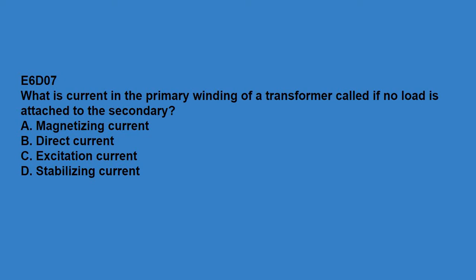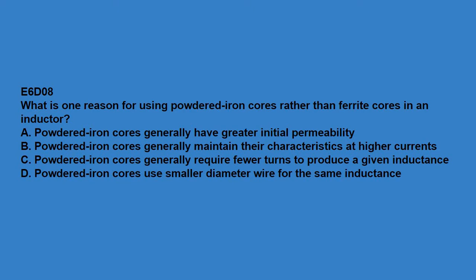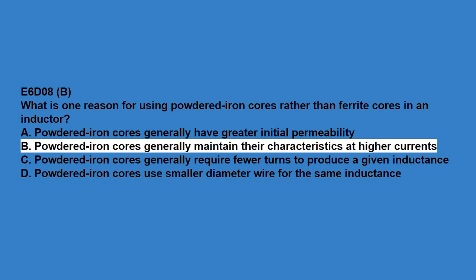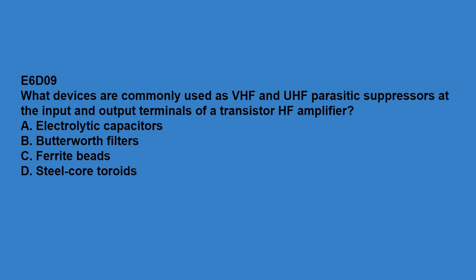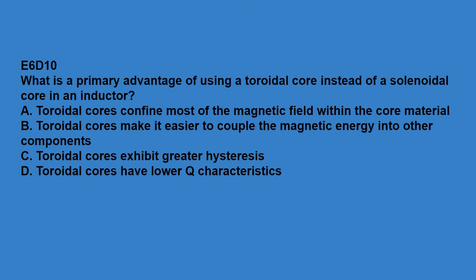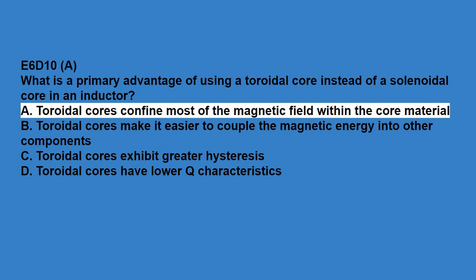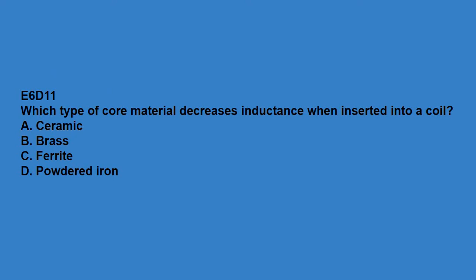E6D07: what is the current in the primary windings of a transformer called if no load is attached to the secondary? Magnetizing current. E6D08: what is one reason for using powdered iron cores rather than ferrite cores in an inductor? Powdered iron cores generally maintain their characteristics at higher currents. E6D09: what devices are commonly used as VHF and UHF parasitic suppressors at the input and output terminals of a transistor HF amplifier? Ferrite beads. E6D10: what is the primary advantage of using a toroidal core instead of a solenoidal core in an inductor? Toroidal cores can confine most of the magnetic field within the core material. E6D11: which type of core material decreases inductance when inserted into the coil? Brass.